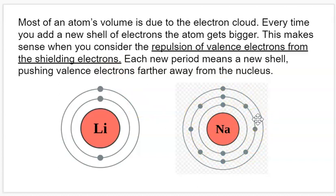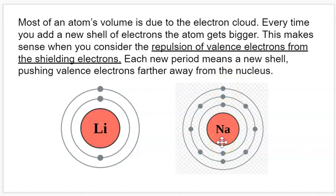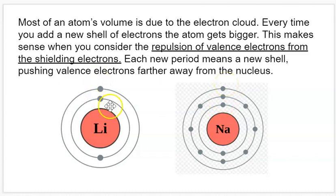We call them shielding electrons because if we consider the balance of forces acting on the valence shell, first we have a force of attraction to the protons in the nucleus. Both lithium and sodium have protons in the center that are pulling on all of the electrons. But the outermost shell electron, which determines the overall radius, is both attracted to the nucleus and repelled by all of the inner shell electrons. So those inner rings of electrons repel the outer shell electron. Lithium has one less shell of repulsion, so its valence electron won't get pushed as far away as it does in sodium. Every time you add a new shell, you increase the number of shielding electrons and therefore increase the distance of the valence electrons from the nucleus because of that increased repulsive force.